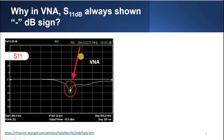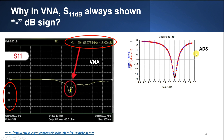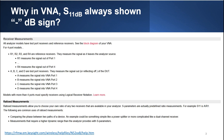In a VNA, the marker is showing negative 18.90 dB - S11 at the y-axis is always shown as a negative value, always below 0 dB. In ADS and CST as well, you can see that S11 is always shown as a negative value.